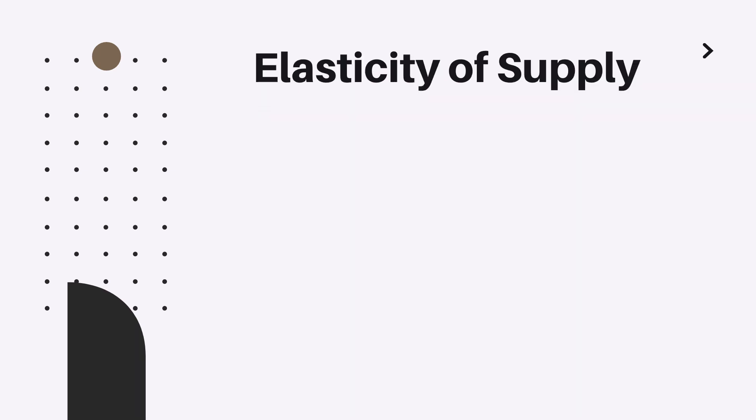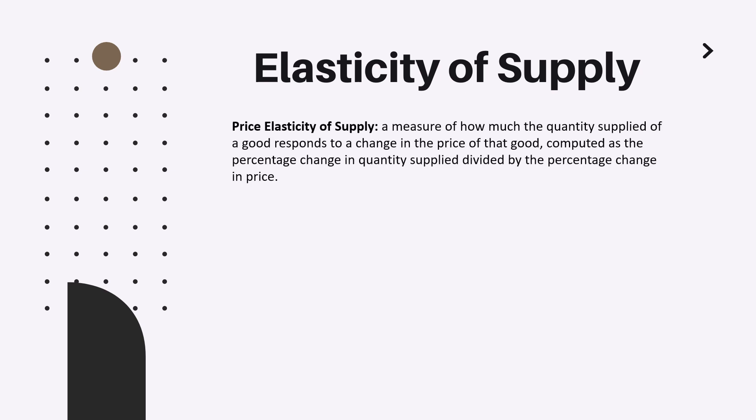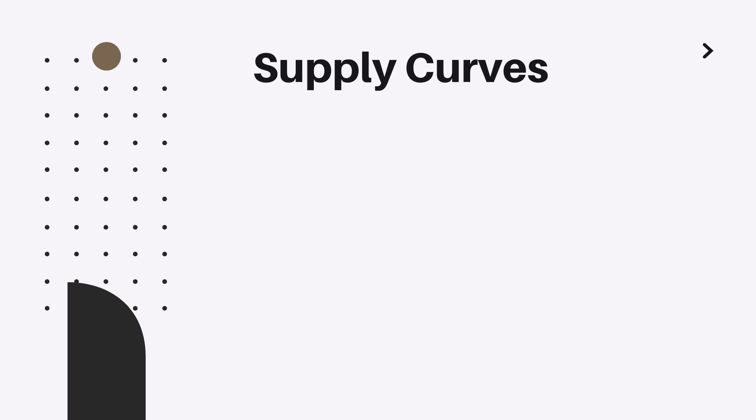Last but not least, let us also discuss the elasticity of supply, which is defined as a measure of how much the quantity supplied of a good responds to a change in the price of that good. Compute it as the percentage change in the quantity supplied divided by the percentage change in the price. Now again, let's try to visualize the elasticity using supply graphs.